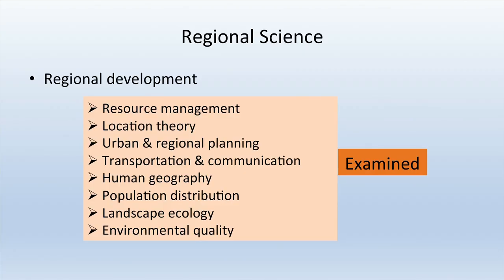With the regional approach, resource management, location theory, urban and regional planning, transportation and communication, human geography, population distribution, landscape ecology, and environmental quality are all examined with the help of regional science. All these techniques are used interchangeably wherever the need arises — cartography for making and analyzing maps, quantitative and qualitative techniques for analysis and planning, and regional science when things are studied on a regional basis.